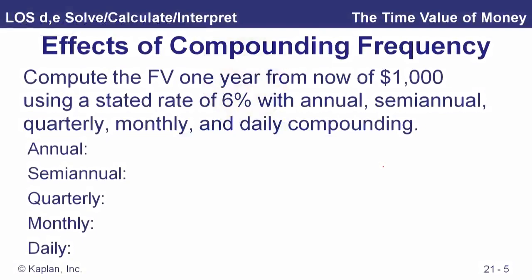Let's look at the effects of compounding frequency. Compute the future value one year from now of $1,000 using a stated rate of six percent with annual, semi-annual, quarterly, monthly, and daily compounding. This is a review of what we looked at earlier in this reading to do with the effective annual rate.